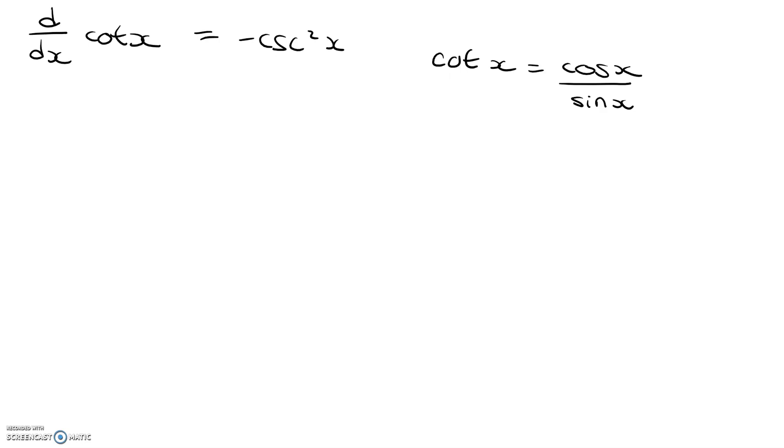First step in this process is to do that. So we're going to say d/dx cosine x over sine x. Now we have a fraction here. What we're going to want to do with this fraction in order to evaluate the derivative of it is we are going to want to apply the quotient rule.